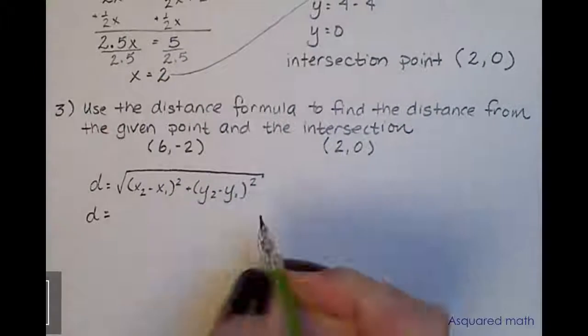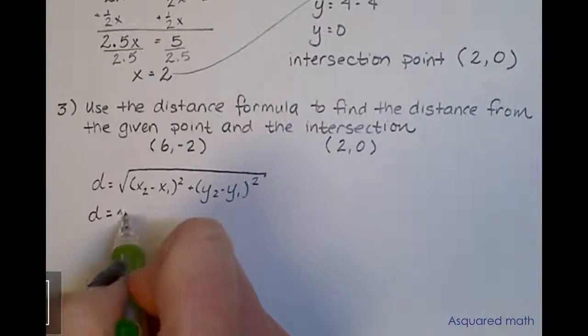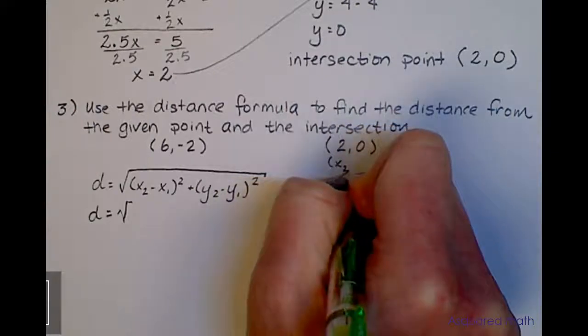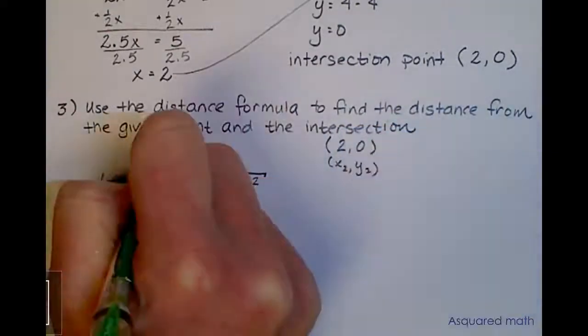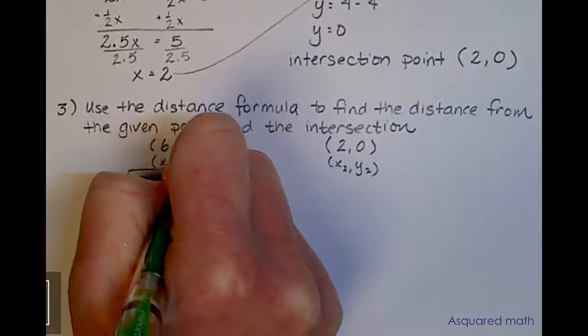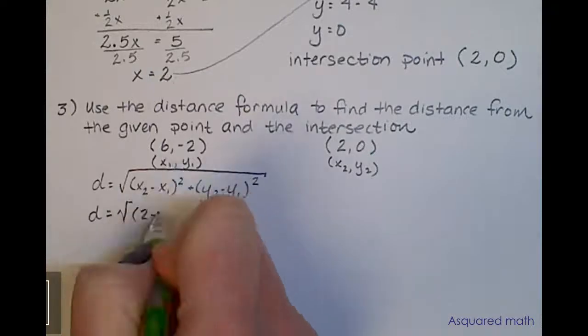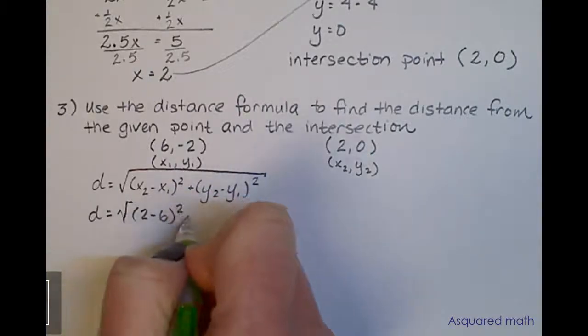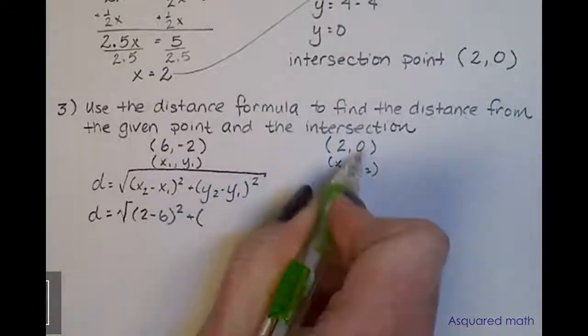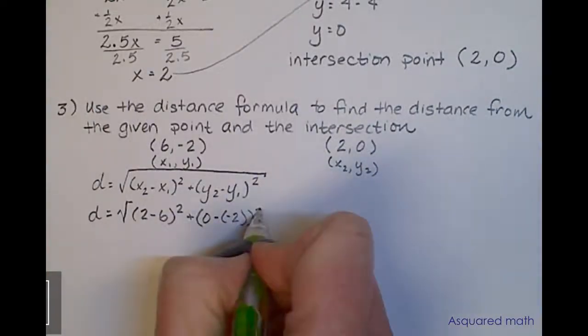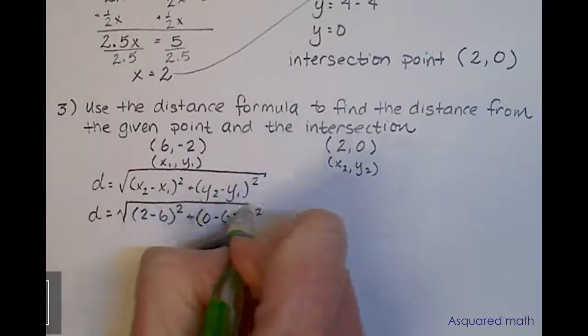Let me plug in the points that we have. We have d = the square root of... I'll say this is x2, y2 and x1, y1. So x2 is 2 minus x1 of 6 quantity squared, plus y2 is 0 minus a negative 2, quantity squared, and square root this whole thing.